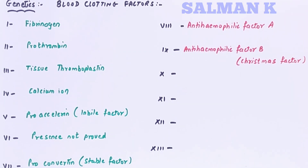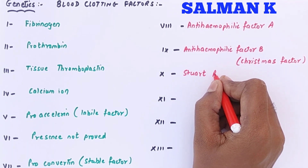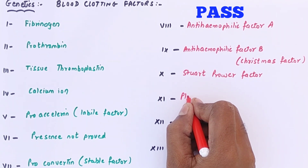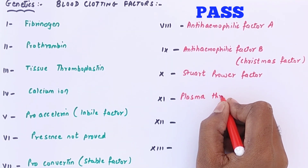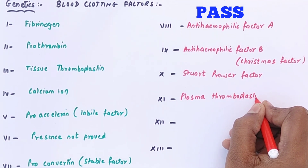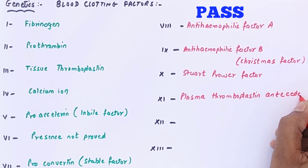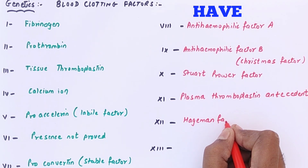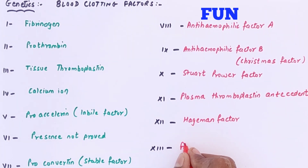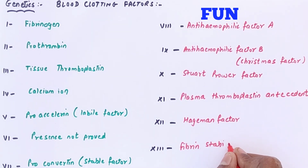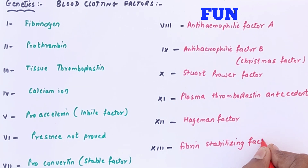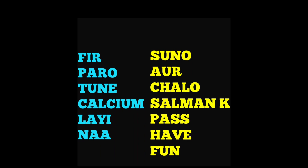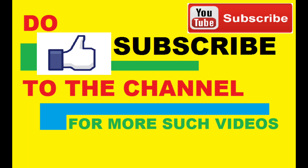Salman refers to 'Das Ka Dum' hosted by Salman Khan — Das means ten, so factor ten. Dum means power, representing the Stuart-Prower factor. Paas stands for plasma thromboplastin (factor 11). Have stands for Hageman factor (factor 12). Fun stands for fibrin stabilizing factor (factor 13). Remember the sentence: 'Fir Paro Tunay Calcium Lai Na Suno Aur Chalo Salman Ke Paas Have Fun.' Do give a like if you understood, and subscribe if you are new!